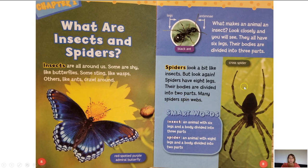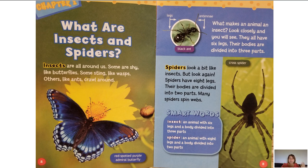Many spiders spin webs. This is a photograph of a cross spider. Boys and girls, we have these bolded smart words, which we can also refer to as vocabulary words. An insect is an animal with 6 legs and a body divided into 3 parts. A spider is an animal with 8 legs and a body divided into 2 parts. Remember: an insect has 6 legs divided into 3 parts, and a spider has 8 legs divided into 2 parts.